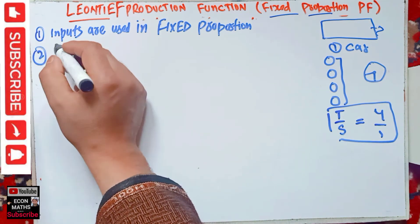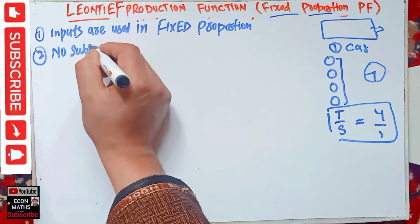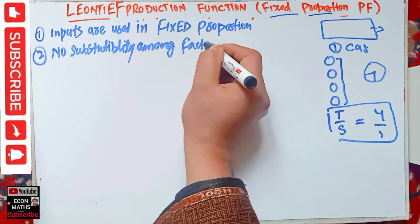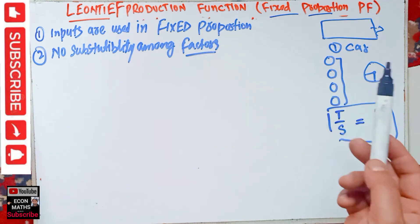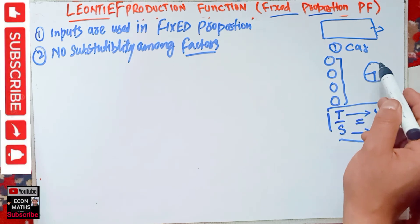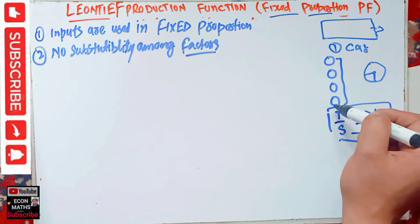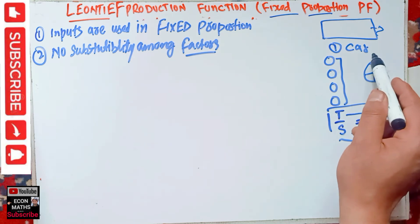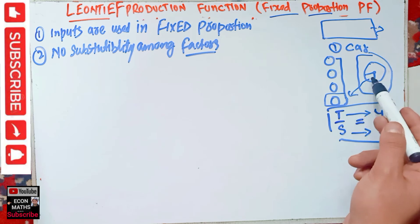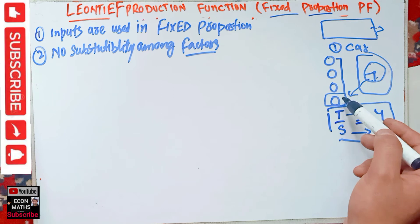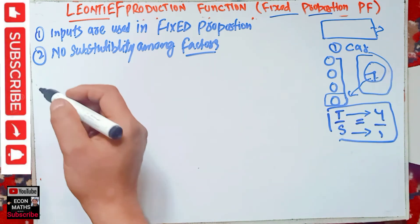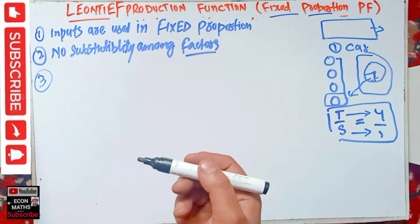Another property is no substitutability among factors. This means we cannot substitute one factor for another. We have two inputs here — tires and steering wheels — and we can't use a steering wheel as a tire or a tire as a steering wheel. There is no substitutability among the factors; we cannot interchange them.